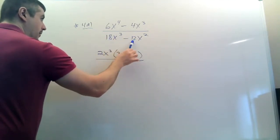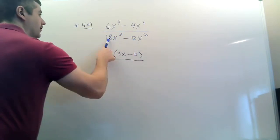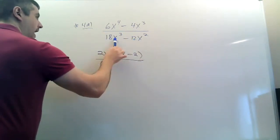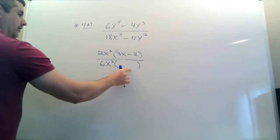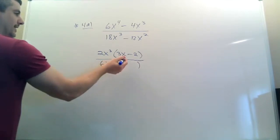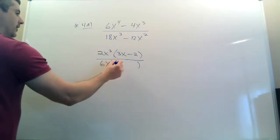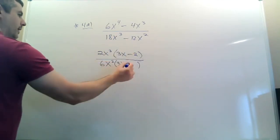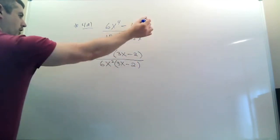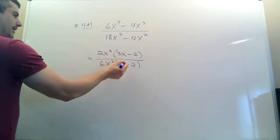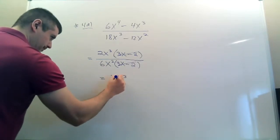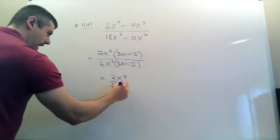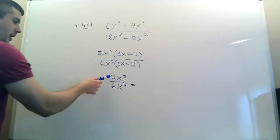On the bottom, factor similarly. 18 and 12 are both divisible by 6, and the letters x² and x³ share x², so pick the smaller power x². 18 divided by 6 is 3; x³ divided by x² leaves x; the minus sign stays; 12 divided by 6 is 2. That x² and that x² cross out. You must get the same binomial on top and bottom or you won't be able to cross it out. Now people get stuck here.